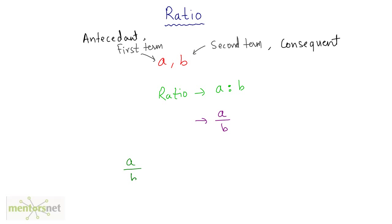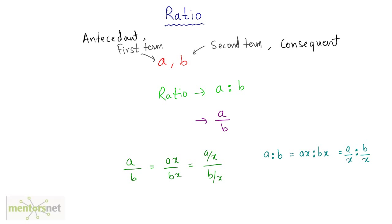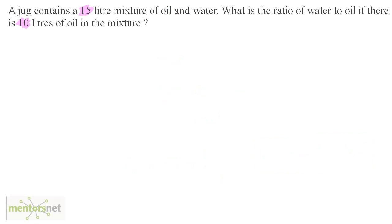There is an important property of ratios. If you have a ratio of a is to b, and you multiply or divide both terms by the same value x, the ratio does not change. So a:b equals ax:bx, which also equals (a/x):(b/x). Multiplying or dividing both the antecedent and the consequent by the same term leaves the ratio unchanged.